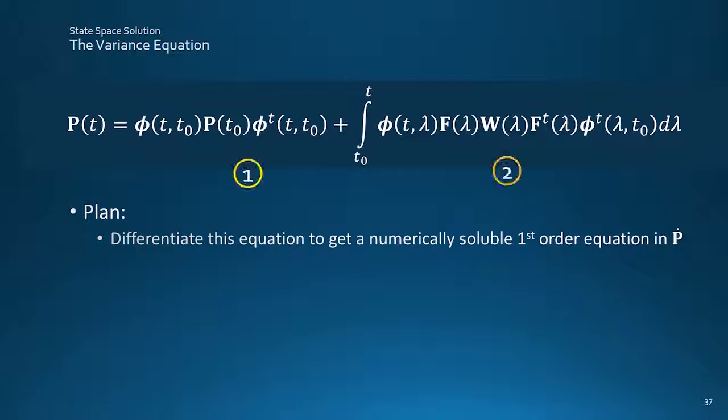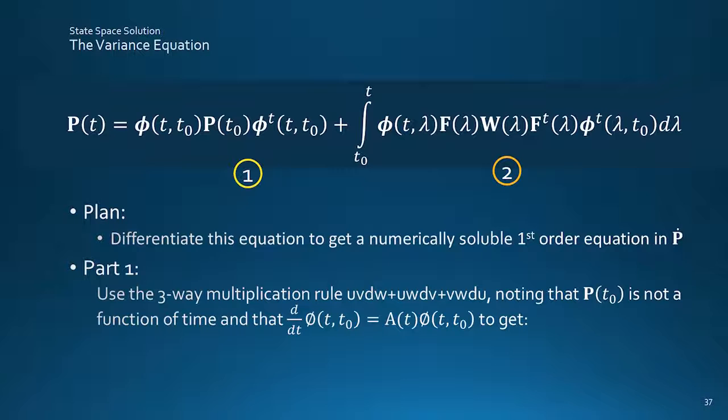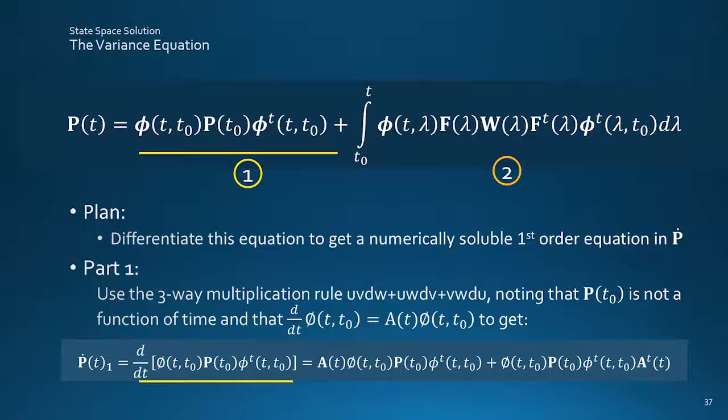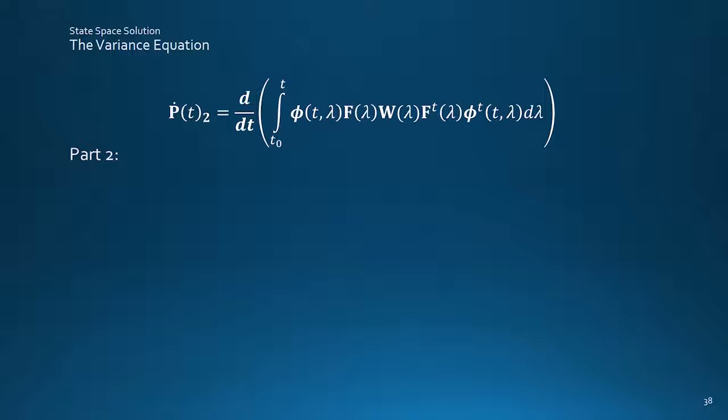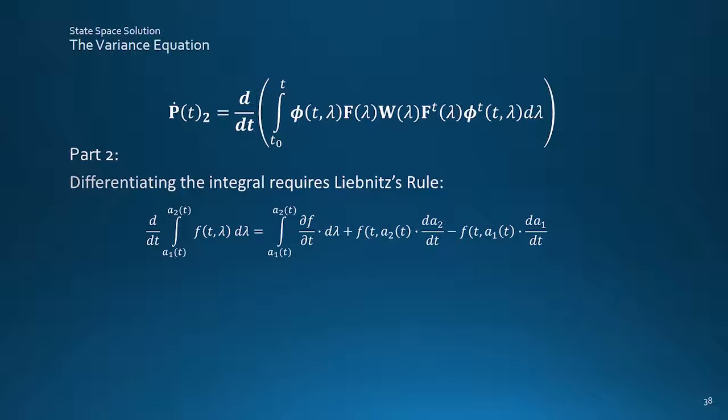The differentiation is attacked in two parts. The first bit can be done using the three-way multiplication rule, simplified the bit by the derivative of RT0T0 being 0 as it's a fixed initial condition, and also complicated the bit using the property of the STM of its derivative amounting to a multiplication by the system matrix A, giving this result. Moving on to differentiating the integral part, things get a bit trickier. Leibniz's rule is used here, with these substitutions for the limits and their derivatives, resulting in this, the third term being 0 as A1 is a constant.